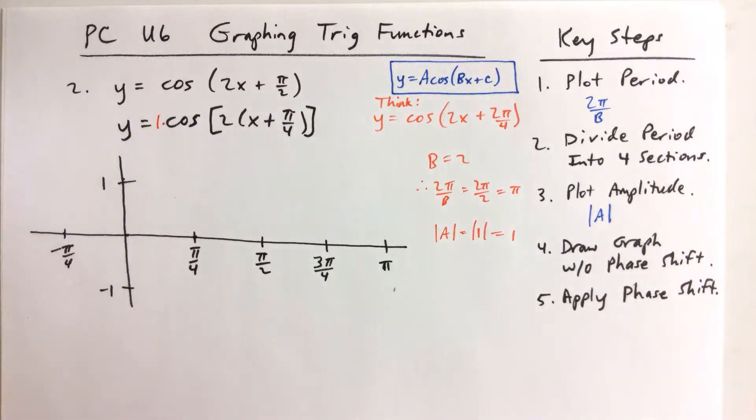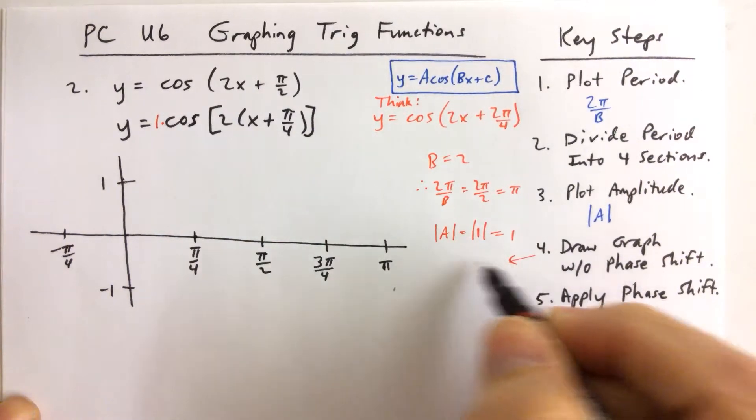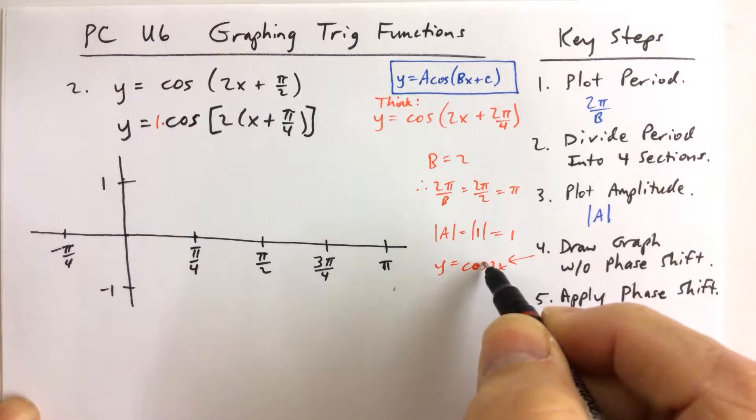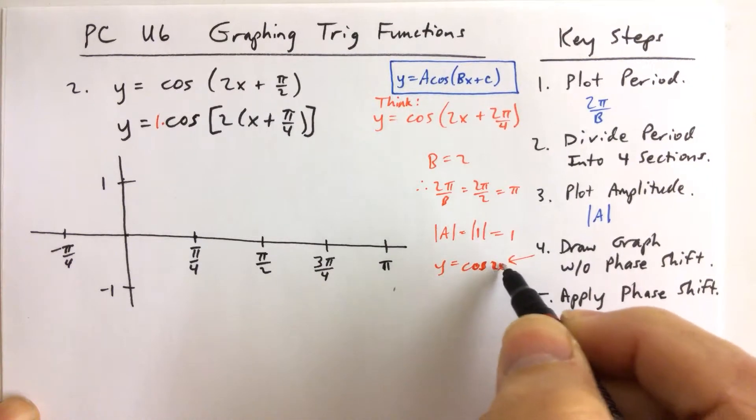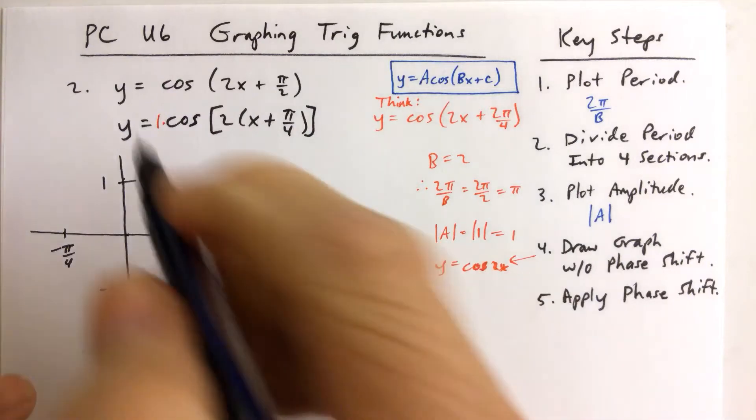And then draw the graph without the phase shift, meaning I'm drawing the graph of y equals cosine, so this one would be y equals the cosine of 2x. Well, bottom line is, our five key points on the graph of the cosine would be right here.